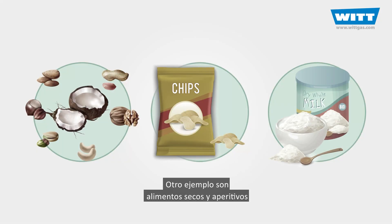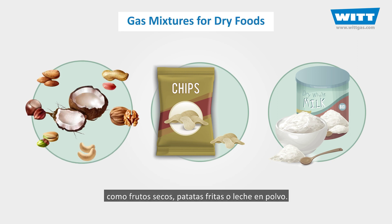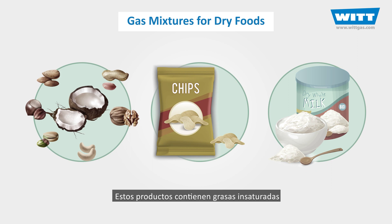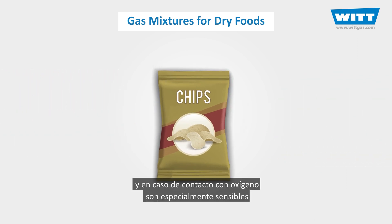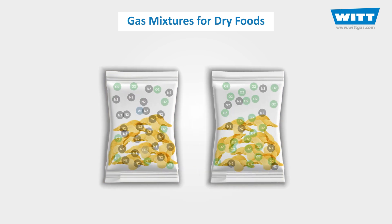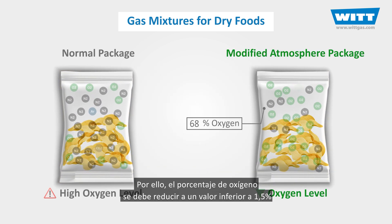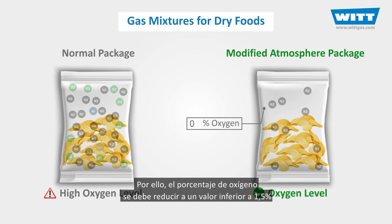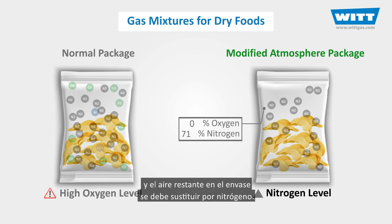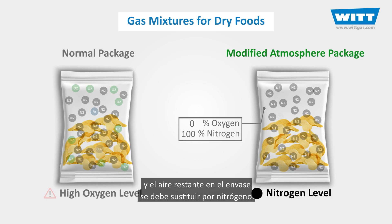As another example, let's consider dry foods and snacks like peanuts, potato chips, and baby milk powder. These foods contain unsaturated fats that make them sensitive to oxidation and rancidity when oxygen is around. So the oxygen amount must be reduced to under 1.5%, and the rest of the air inside the package must be replaced with nitrogen.